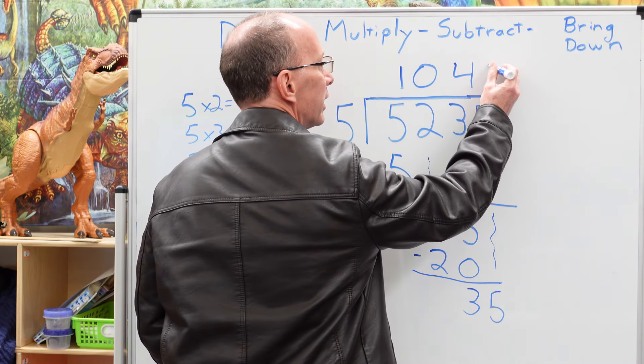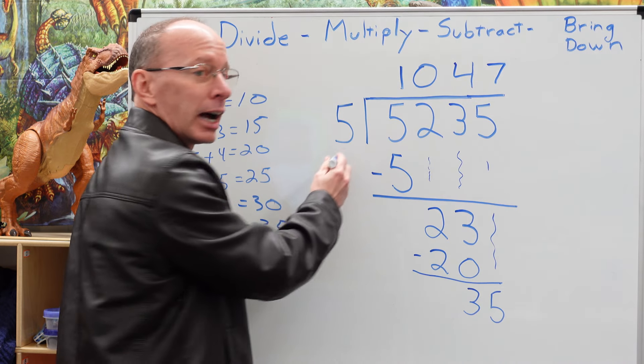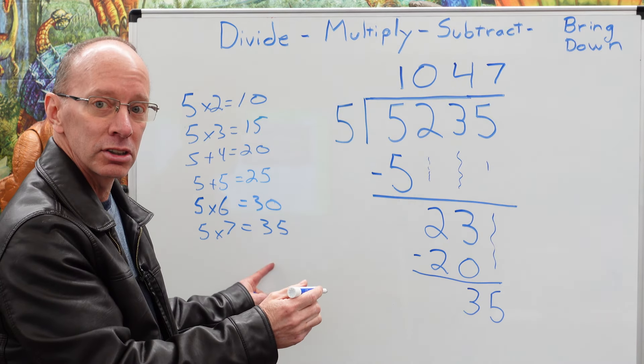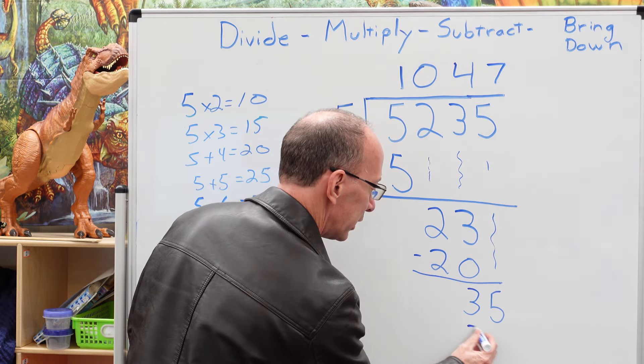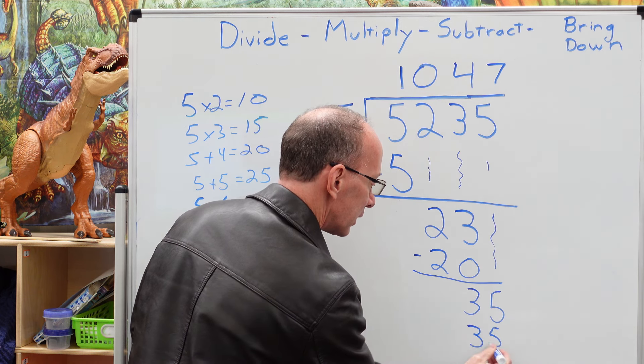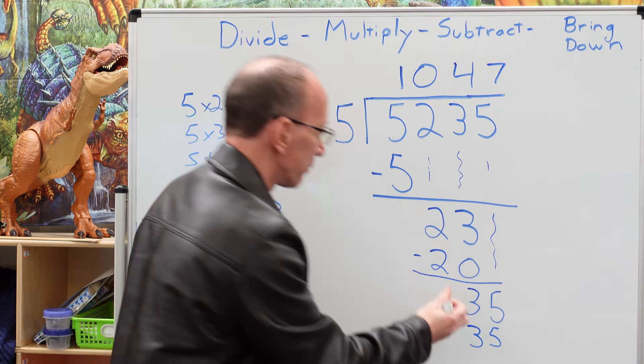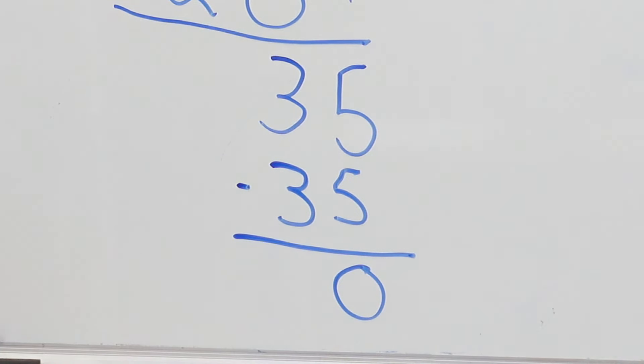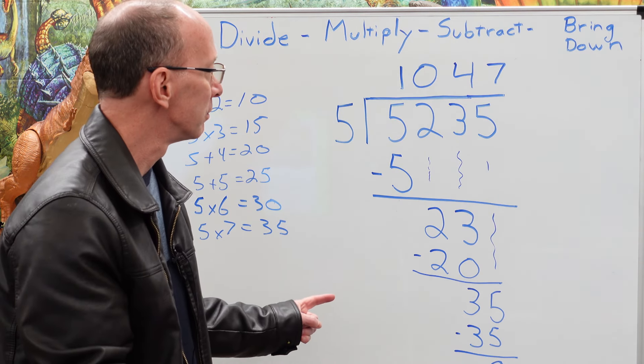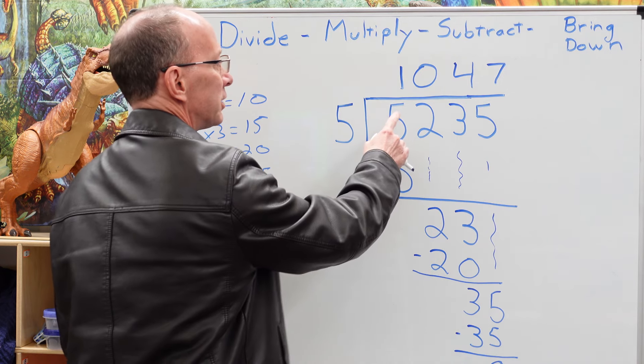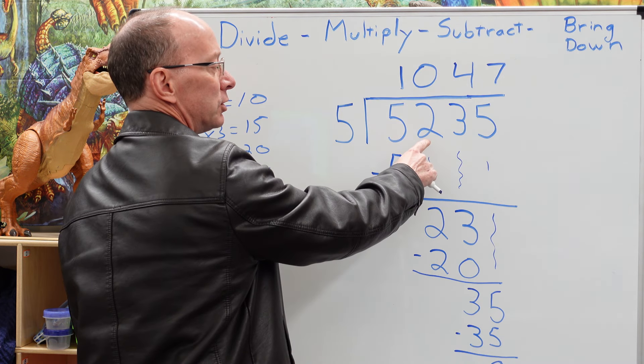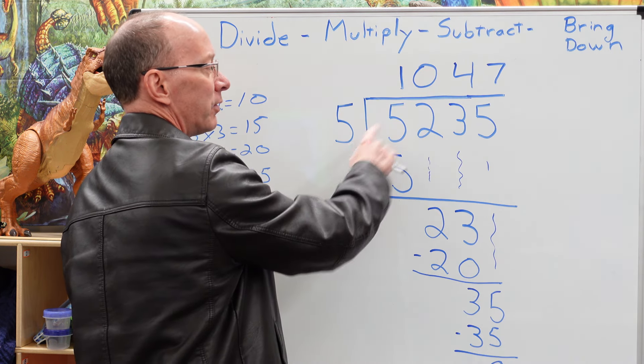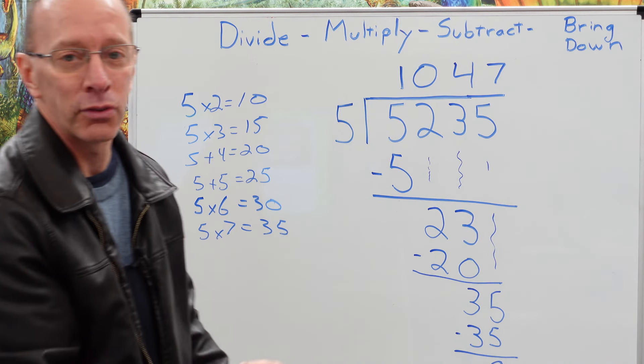All right. So I'm going to put a seven right here. Seven times five equals 35. I'm putting the 35 right here. Subtract. And we have a remainder of zero. All right. So this is our answer right here. 5,235 divided by five equals 1,047.